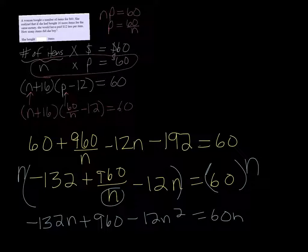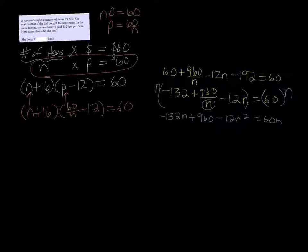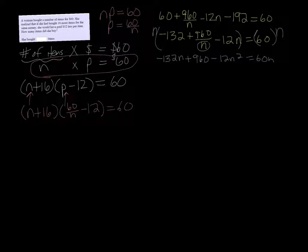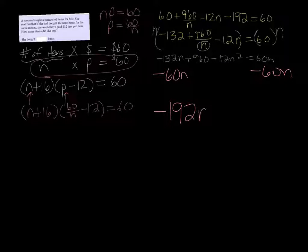Okay, so now we can see that it's a quadratic equation that we're solving, and you're probably not surprised by that. So I want all of one side to be zero and everything else on the other side, so I'm going to subtract 60N on both sides, and that's going to be negative 192N plus 960 minus 12N squared equals zero. Sorry, my zero, I ran out of room for the zero.